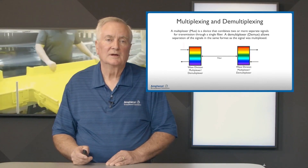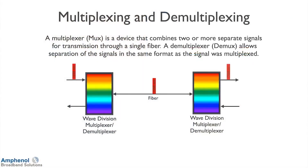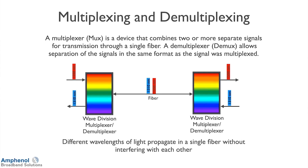Here I'm showing a wave division multiplexer and demultiplexer on both sides with a single fiber in between. The forward downstream signal at 1550 nanometers goes into the multiplexer, is injected onto the fiber, and at the far end the demultiplexer brings it back out at 1550 nanometers. The return upstream signal at 1310 nanometers is put into the multiplexer on the right onto the same fiber, and comes back out at 1310 nanometers at the demultiplexer. So we have multiple wavelengths — and therefore multiple signals — on one fiber. Very efficient and very cost effective.